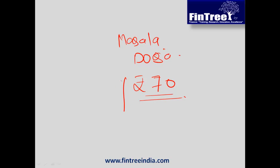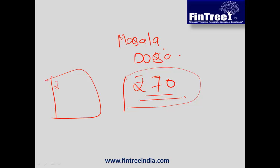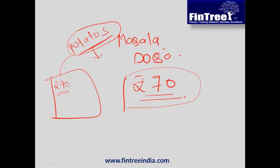Imagine the problem of the restaurant owner who sells this dosa at 70 rupees. He has a menu card with the price of masala dosa written as 70. Now, what are the inputs required here? Primarily, the most important input is going to be potatoes. The problem is that the price of these potatoes in the market will keep on changing.